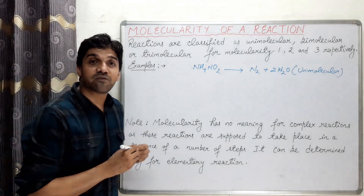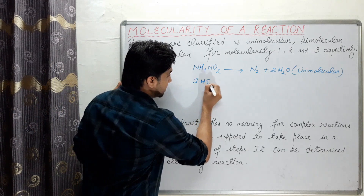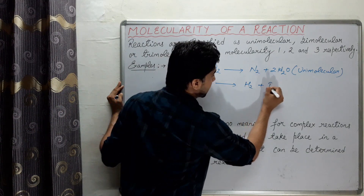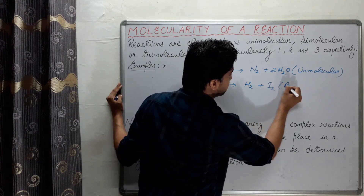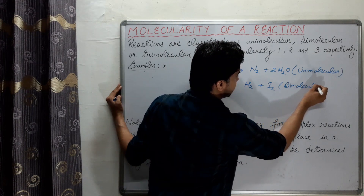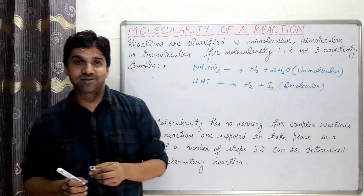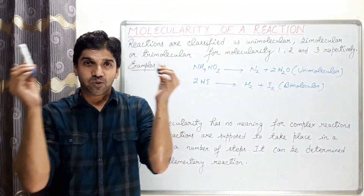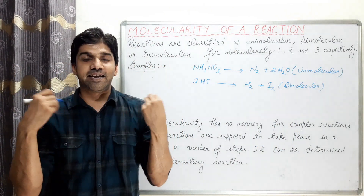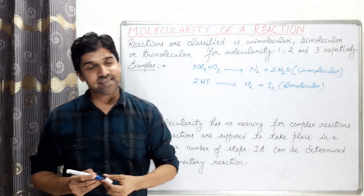Example of bimolecular reaction: 2HI decomposes to form hydrogen and iodine. It is a bimolecular reaction. That means two molecules of HI collide together simultaneously in order to bring about the reaction.